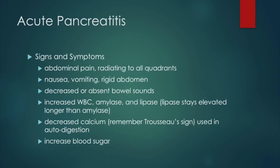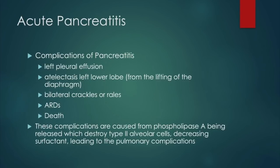Signs and symptoms of pancreatitis include abdominal pain radiating to all quadrants, nausea, vomiting, rigid abdomen, decreased or absent bowel sounds, increased white blood cell count, elevated amylase and lipase. Lipase stays elevated longer than amylase; amylase can be elevated up to about four days. There is also decreased calcium, which can cause Trousseau's sign, as calcium is used in autodigestion of the pancreas. Blood sugar may also increase. Complications include left pleural effusion, atelectasis of the left lower lobe, bilateral crackles leading to ARDS and even death — caused by release of phospholipase A, which destroys type 2 alveolar cells responsible for releasing surfactant.